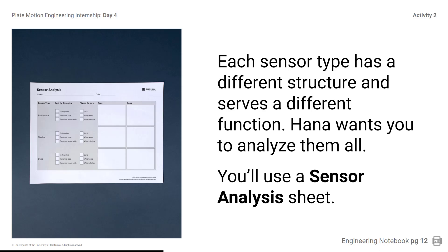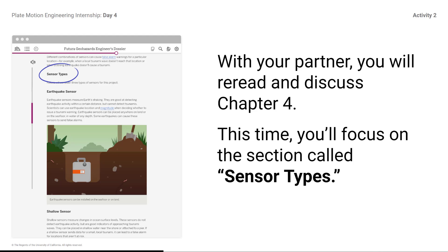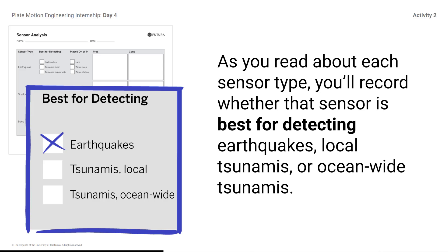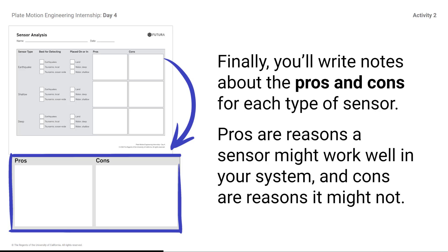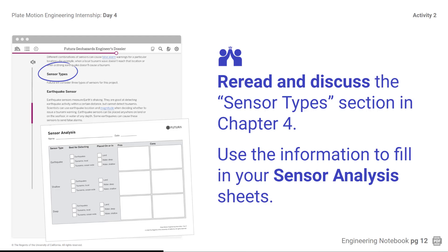You'll use a sensor analysis sheet. With your partner, you will re-read and discuss Chapter 4, focusing on the section called Sensor Types. Remember, engineers read documents more than once. As you re-read, continue to think about the focus question: How do tsunami warning systems work? Think about how you might use these sensors in your tsunami warning systems. As you read about each sensor type, you'll record whether that sensor is best for detecting earthquakes, local tsunamis, or ocean-wide tsunamis. You will also record where you can place each type of sensor — on land, in deep water, or in shallow water. Finally, you'll write notes about the pros and cons of each type of sensor. Pros are reasons a sensor might work well in your system, and cons are reasons it might not.